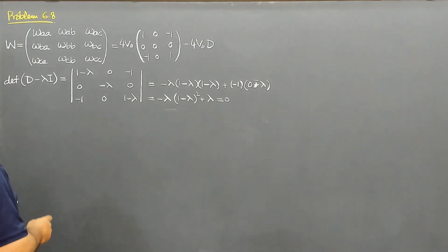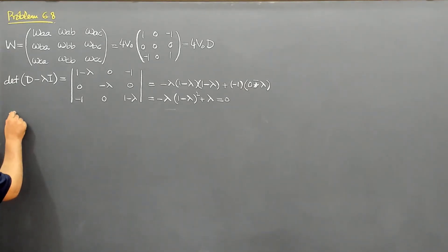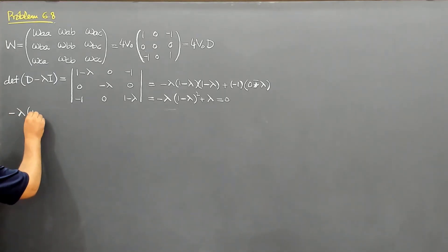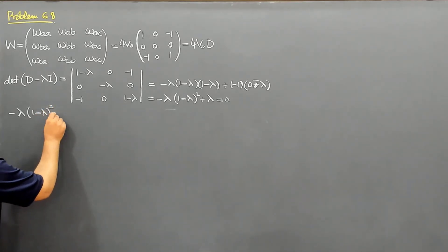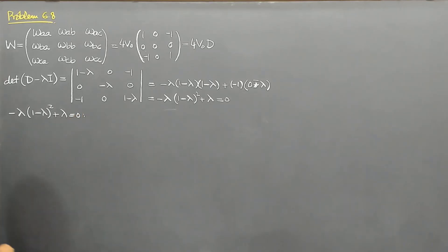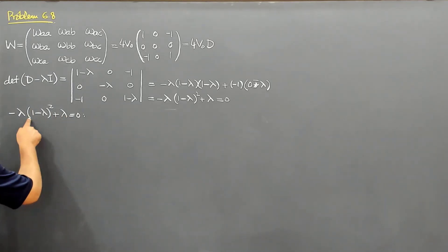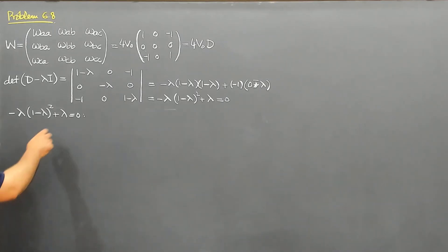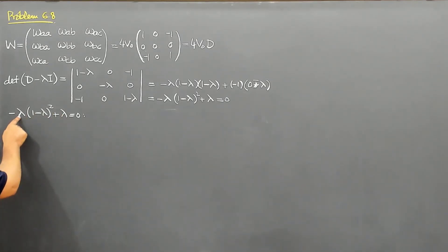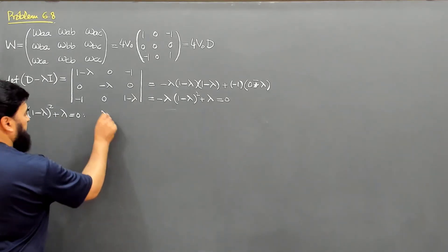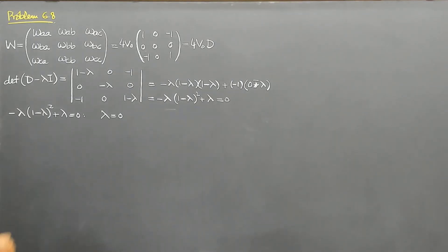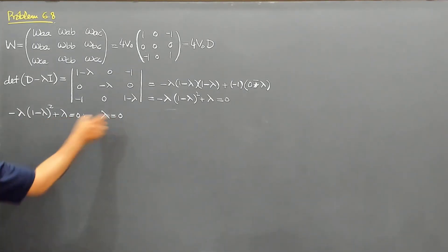This equation is a bit complex in terms of how the roots come out. I can write: minus lambda times (1 minus lambda) squared plus lambda equals 0. This means these two terms sum to zero. One possibility is that lambda equals 0 — if lambda equals 0, both terms become 0. So lambda equal to 0 is one solution.